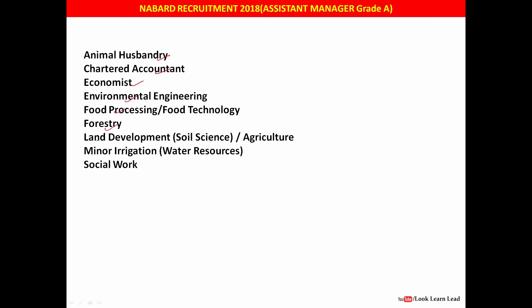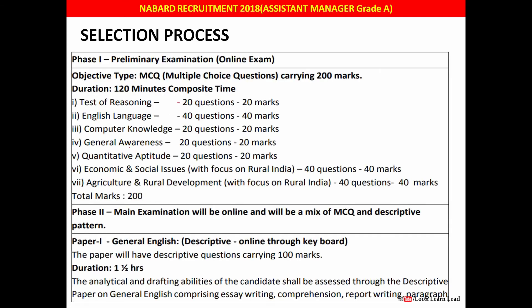Other disciplines include Land Development, Minor Irrigation, and Social Work. For all these discipline-specific posts, the link to the official notification has been shared; you can check your eligibility. The minimum qualification for all these posts is a graduation in the respective field.